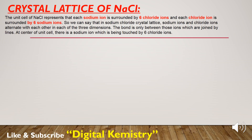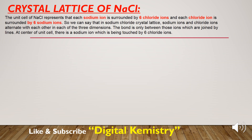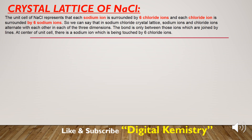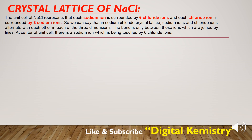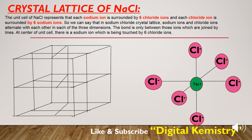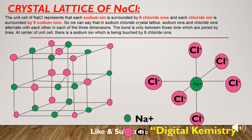Describing the crystal lattice of sodium chloride, we see that the unit cell of sodium chloride represents that each sodium ion is surrounded by six chloride ions, and also that each chloride ion is surrounded by six sodium ions.